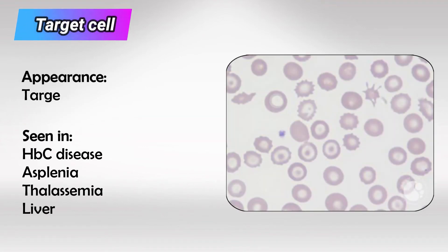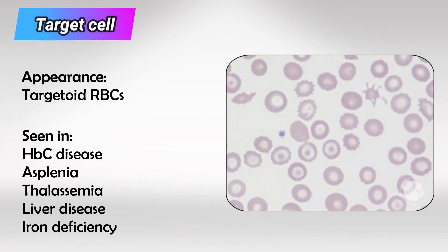Next we have target cells, and it is very important to know the diseases causing target cells, which are hemoglobin C disease, asplenia, thalassemia, liver disease, and sometimes iron deficiency.